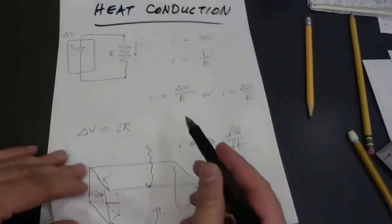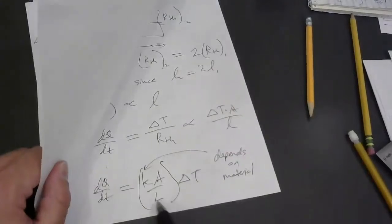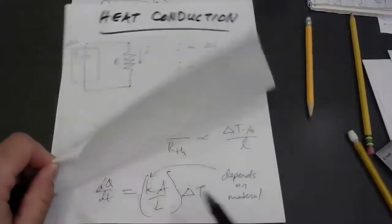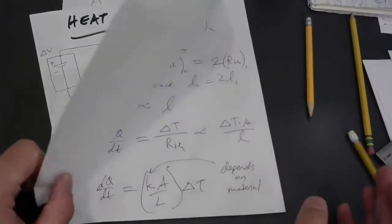But in this case, the width of the slab is what you would call L. And the area, the surface area there would be A. So you want to get some practice with those problems.